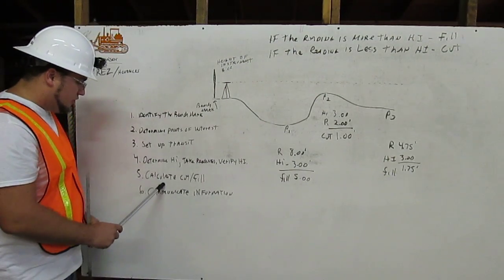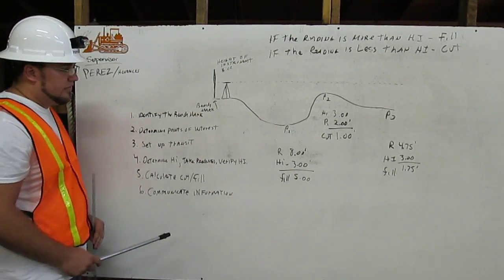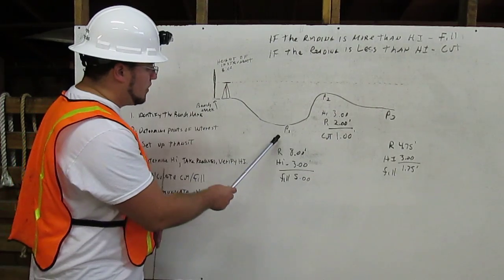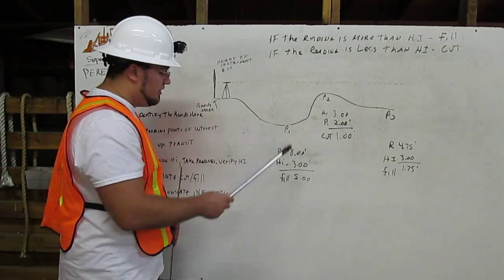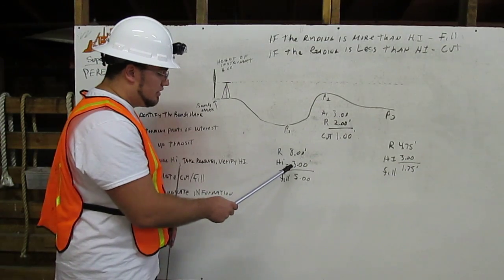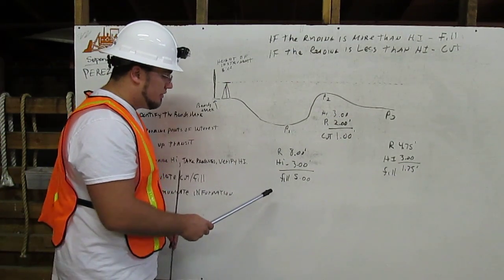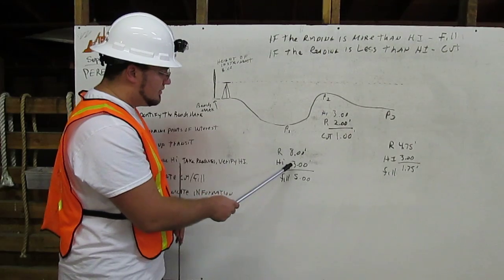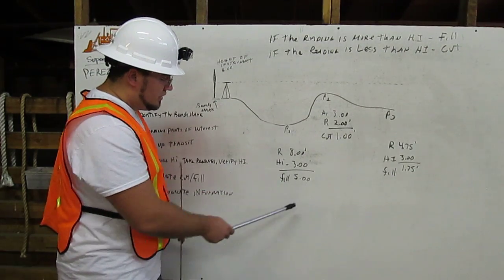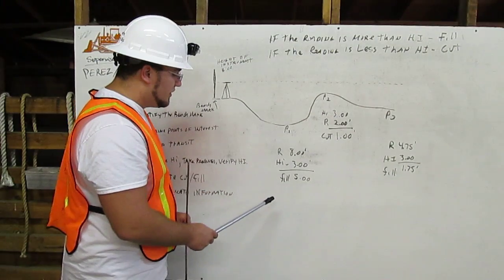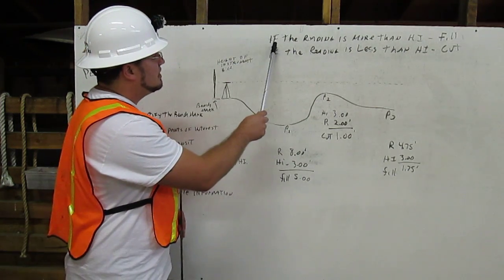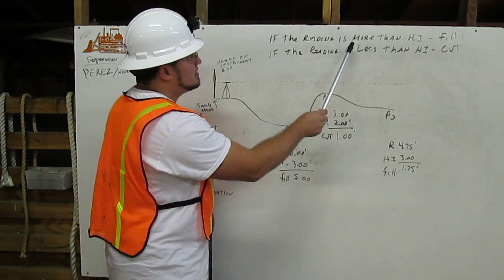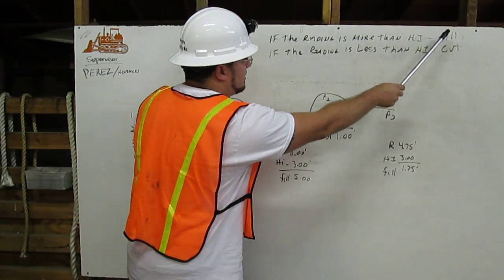For step five, we will calculate cut and fill. So for point one, we had a reading of 8.00 feet and a height of 3.00 feet. We're going to subtract 3 from 8, that is 5.00 feet. And it's going to be a fill because if the reading is more than the height, it is a fill.